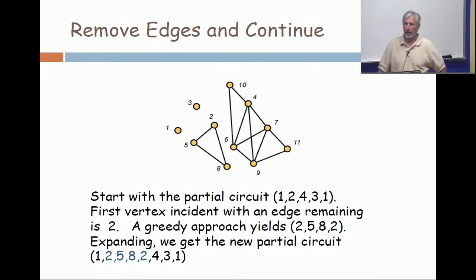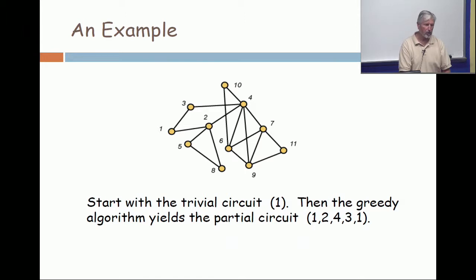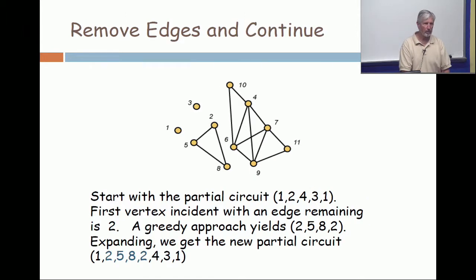Remove the edges that you have walked on from the graph. So, hopefully, this picture looks just like the preceding one. Let me scan back real quickly. You see the extra edges? They're gone now. All right. So, we have the partial circuit one, two, four, three, one. First vertex in that list that's incident with an edge remaining is vertex two, the second one. All right. So, now, we begin again. What does the greedy approach result in? Well, in this case, greedy is forced to go two, five, eight, back to two. But notice, it goes two, five, eight, two.